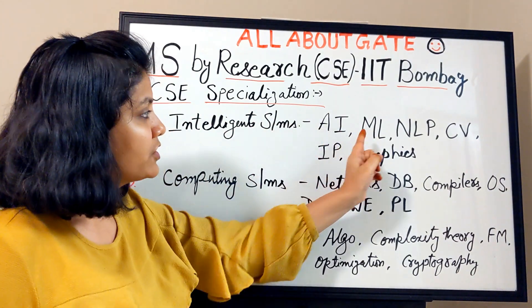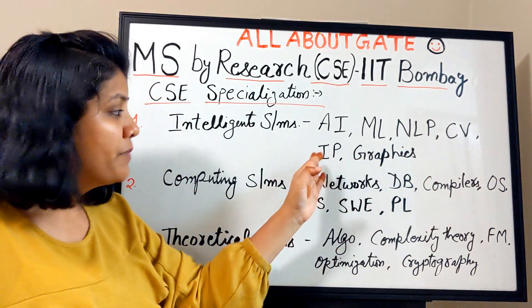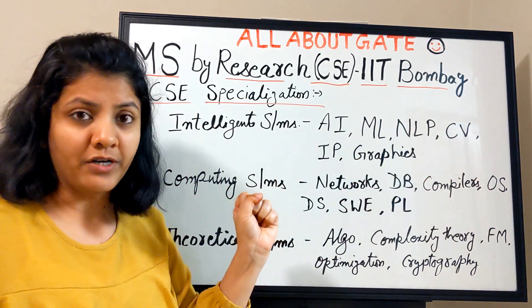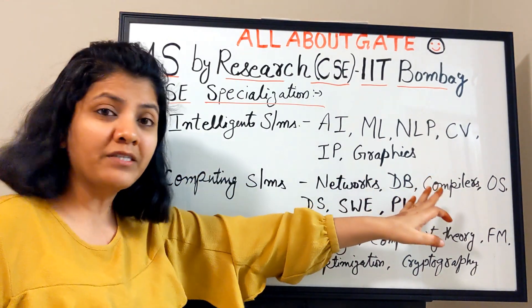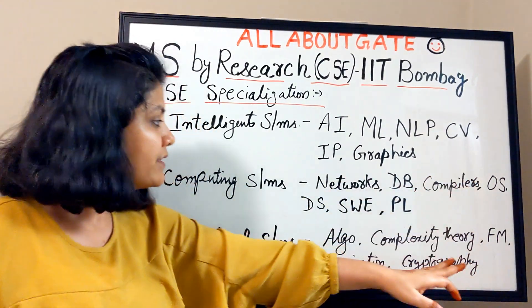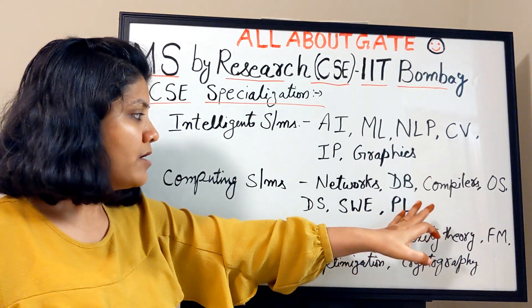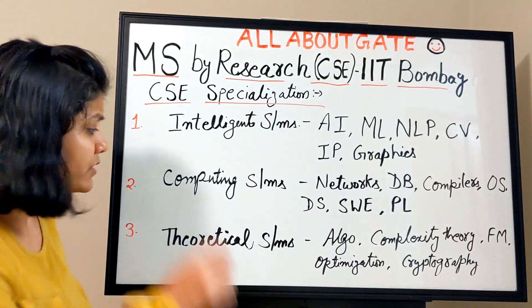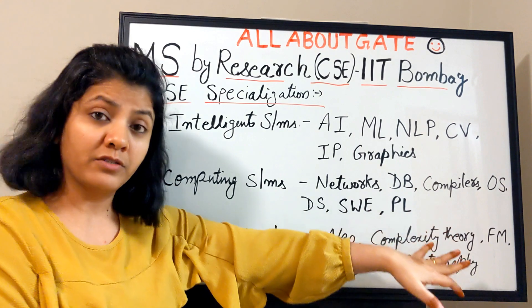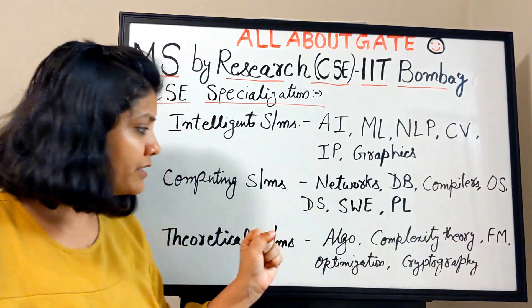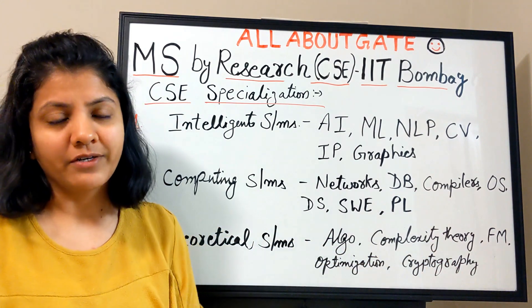Intelligent Systems covers Artificial Intelligence, Machine Learning, Natural Language Processing, Computer Vision, Image Processing, Graphics, etc. Computing Systems covers Networks, Databases, Compilers, Operating Systems, Distributed Systems, Software Engineering, Programming Languages, etc. Theoretical Systems covers Algorithms, Complexity Theory, Formal Methods, Optimization Techniques, Cryptography, etc.